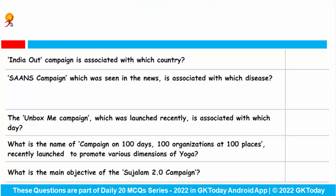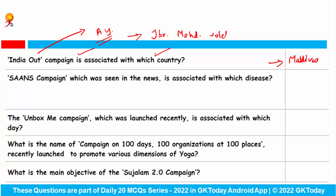The India Out campaign is associated with which country? This campaign is related to the country Maldives, and it was initiated by former President Abdullah Yameen. The current President of Maldives is Ibrahim Mohamed Solih.